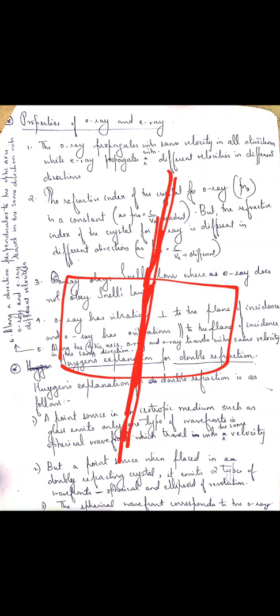Along the optic axis, the ordinary and extraordinary rays travel with the same velocity in the same direction, so there is no double refraction. Whereas, in a direction perpendicular to the optic axis, they travel in the same direction but with different velocities. When they come out of the crystal, they will have a path difference. So, perpendicular to the optic axis, they travel in the same direction but with different velocities.